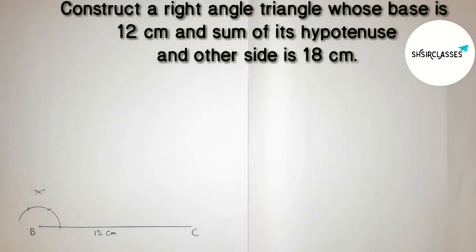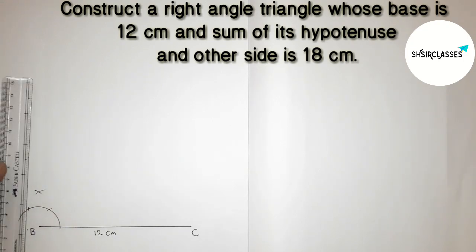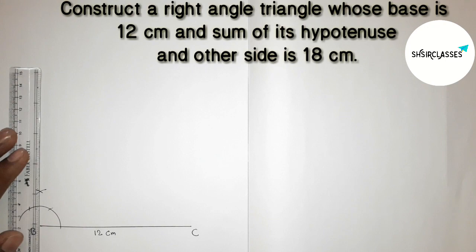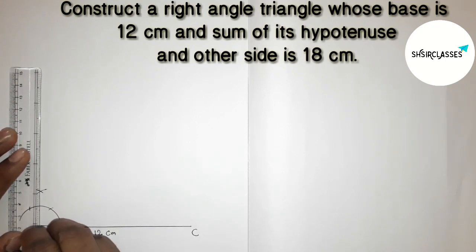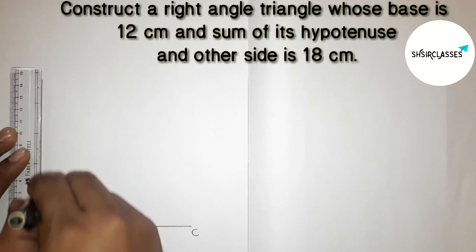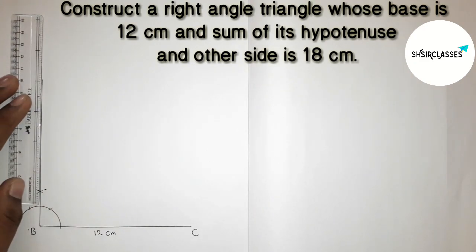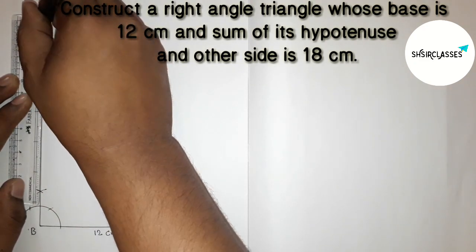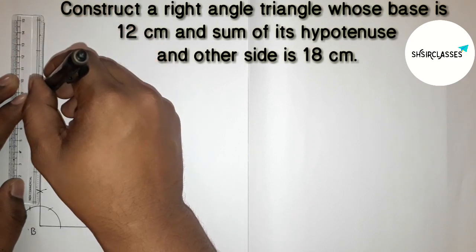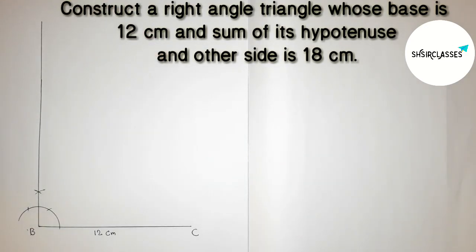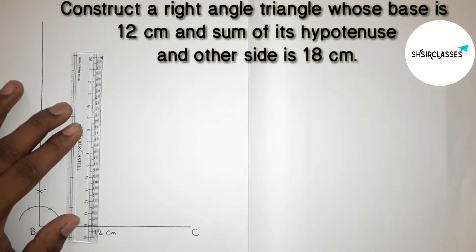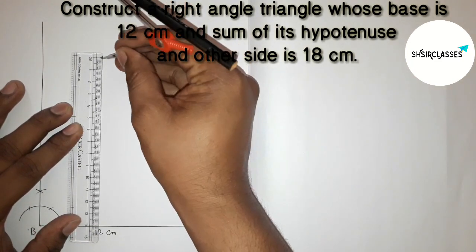Joining the line to get a 90 degree angle at B. Now we have to increase this line to 18 centimeter.